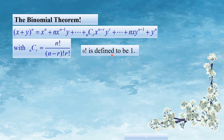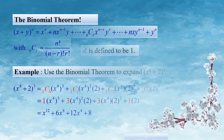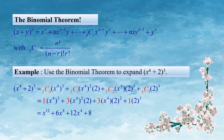0 factorial is equal to 1. That is the number raised to 0 equals 1. Let's start with x raised to 4 plus 2, all cubed.